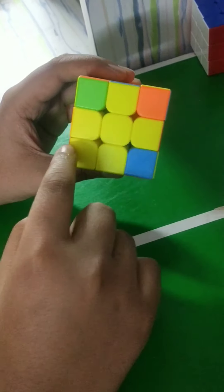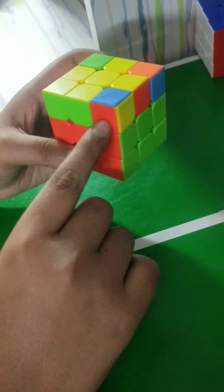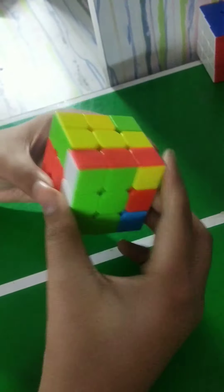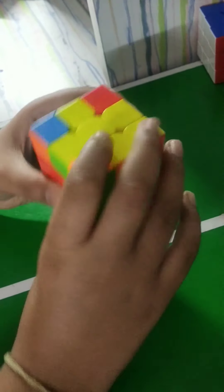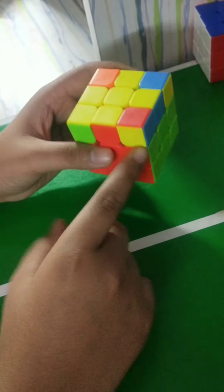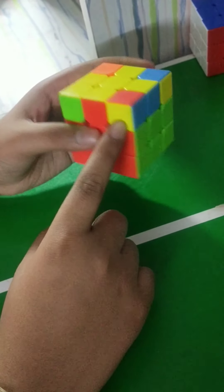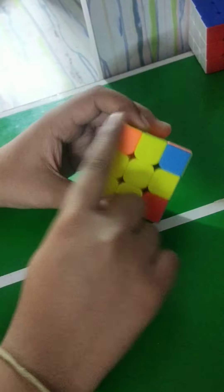Once you have the fish, make it face down here. And if you have here, then you'll do the same algorithm. Now you'll have the fish again and rotate twice. And here you have got the yellow piece instead of this. Now this algorithm will solve the whole yellow side.